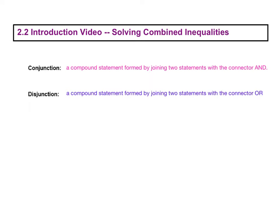So if you want to pause and just write this in, a conjunction is a compound statement formed by joining two statements with the connector and. And a disjunction is a compound statement formed by joining two statements with the connector or. So you might remember compound inequalities from Algebra 1, the ands and the ors. That's what we're talking about. We can call them combined inequalities, conjunction and disjunction, just more vocab for us to know.